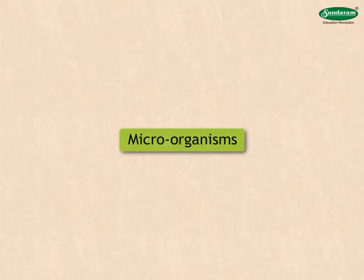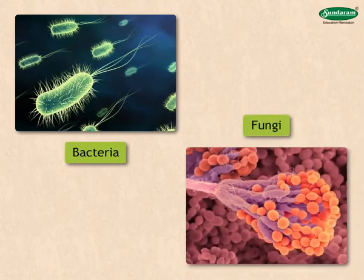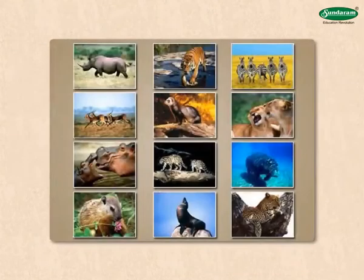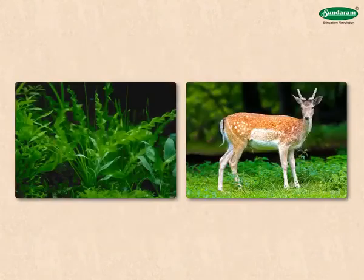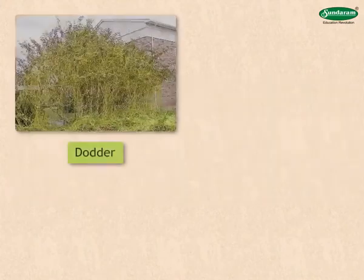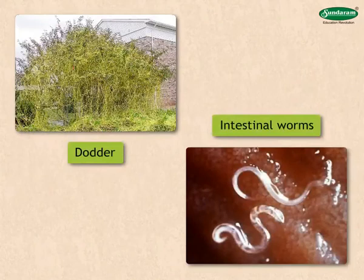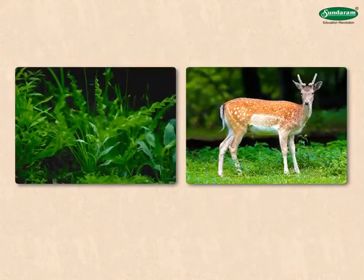Microorganisms include bacteria, fungi, etc. They are also heterotrophs like animals, as they are dependent on plants and animals for their food. Some plants and some animals like intestinal worms depend on other living things not only for their food but for their very existence. Such plants and animals are known as parasites.